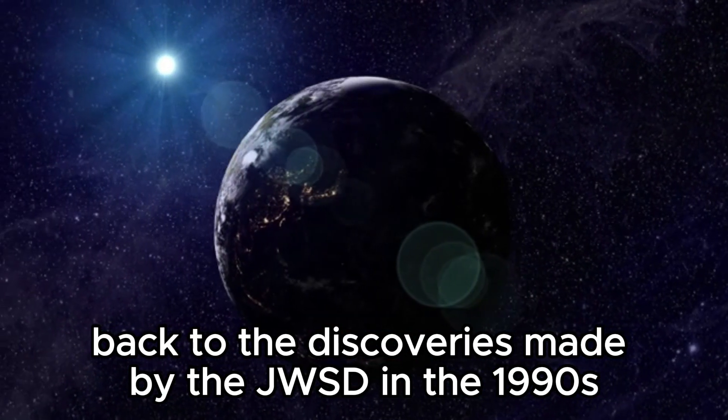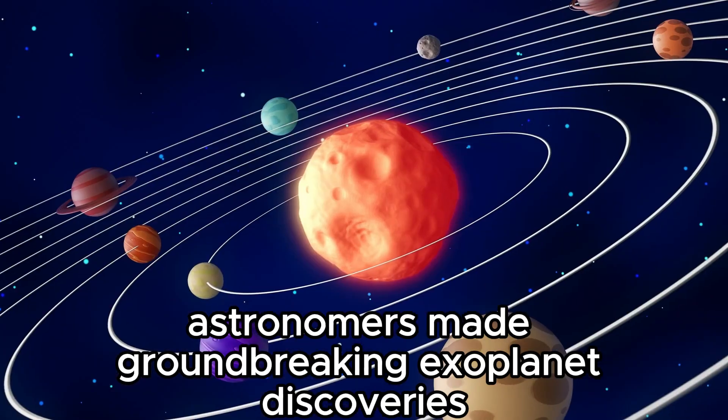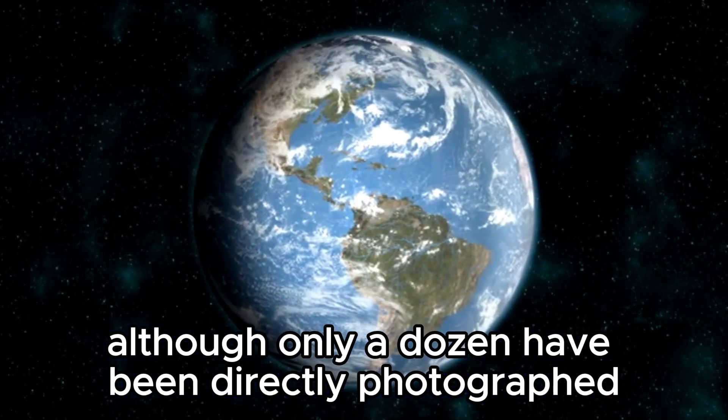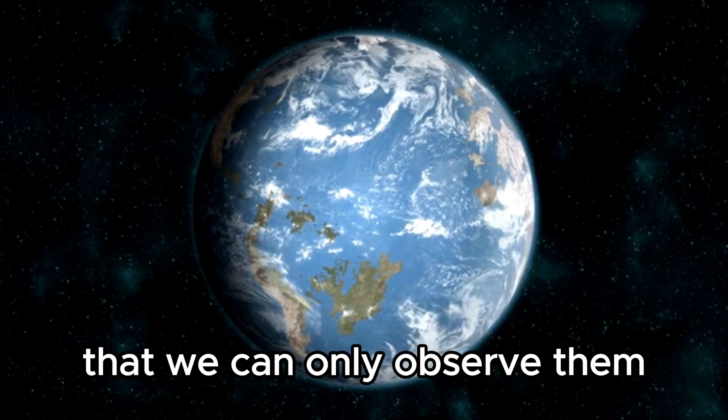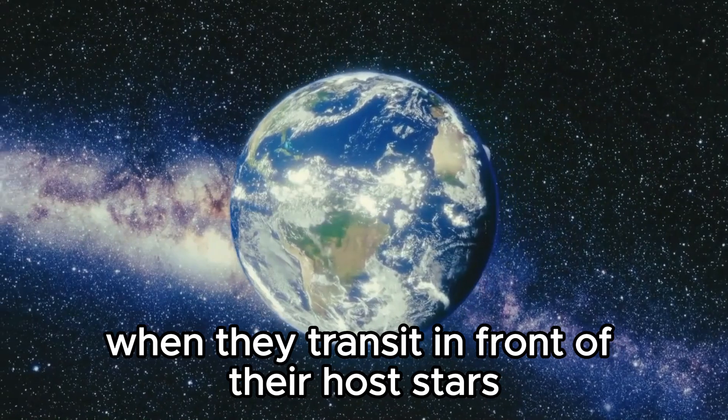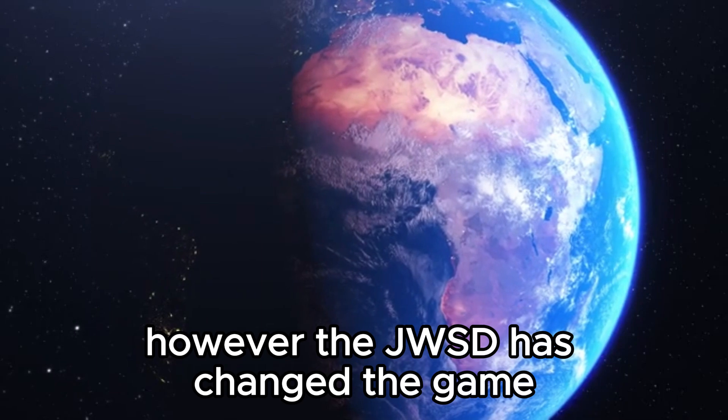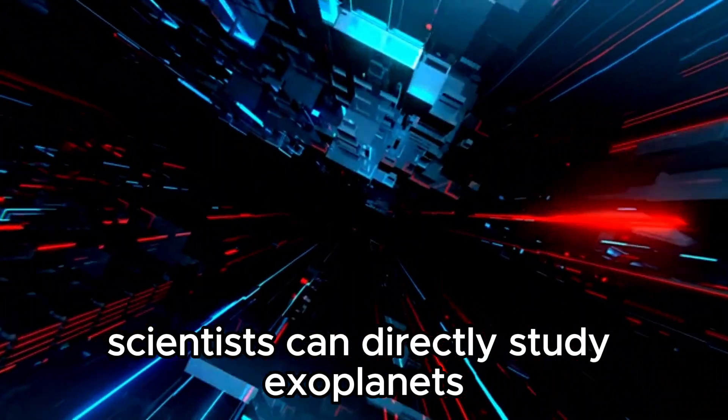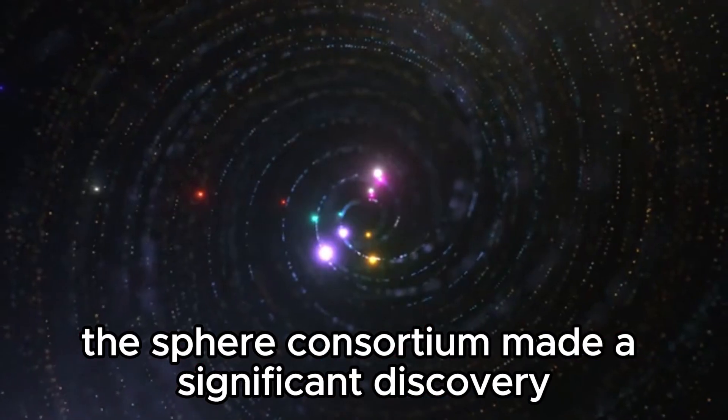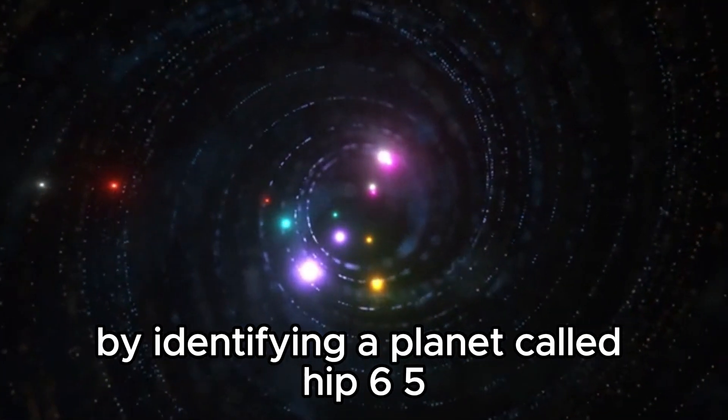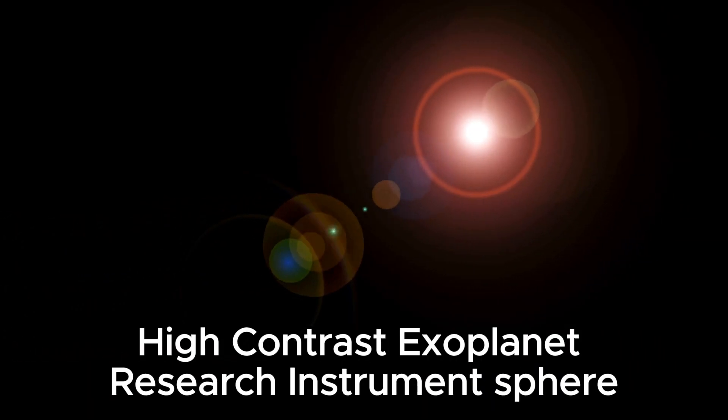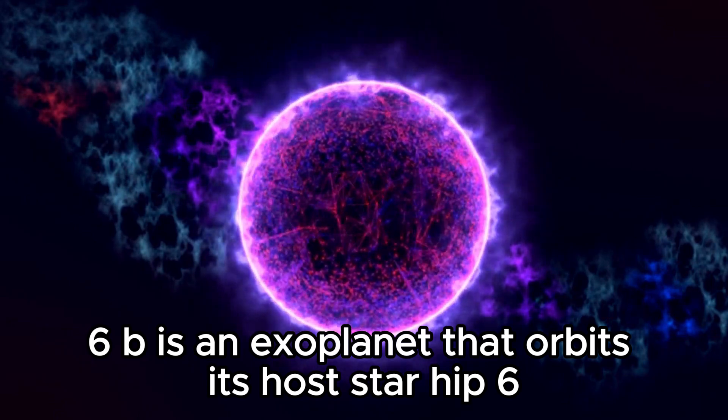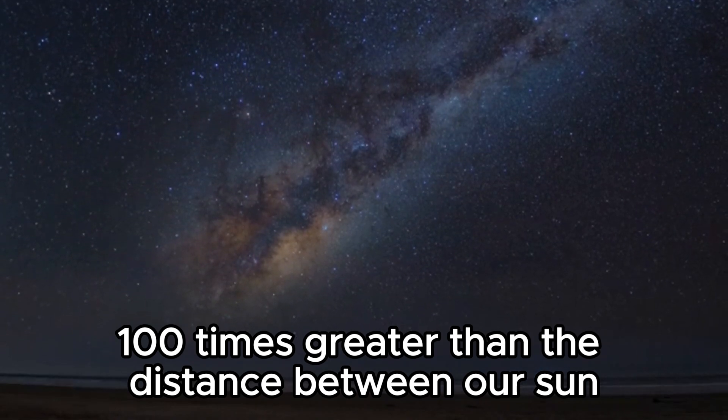Back to the discoveries made by the JWST, in the 1990s, astronomers made groundbreaking exoplanet discoveries thanks to this instrument. We now know of over 3,000 more exoplanets, although only a dozen have been directly photographed. Most exoplanets are so remote that we can only observe them when they transit in front of their host stars. However, the JWST has changed the game. By combining the telescope's coronagraphs with its cameras, filters, and other instruments, scientists can directly study exoplanets. HIP65426b is an exoplanet that orbits its host star at a distance 100 times greater than the distance between our Sun and Earth.